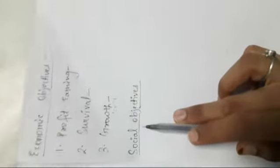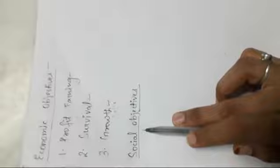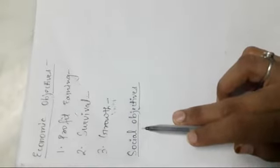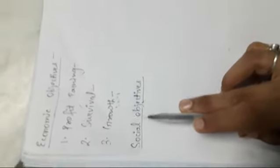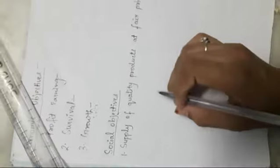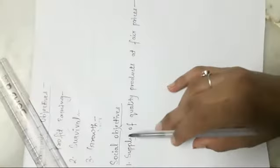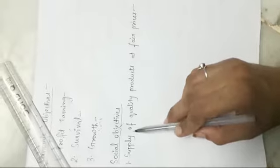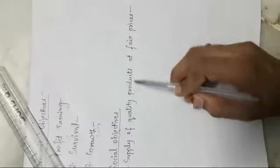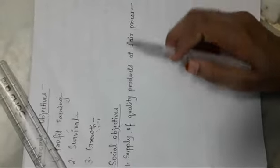Social objectives are about society's benefits — the benefits of the businessmen as well as the benefits of the society. In social objectives, the first point we have is: supply of quality products at fair prices.